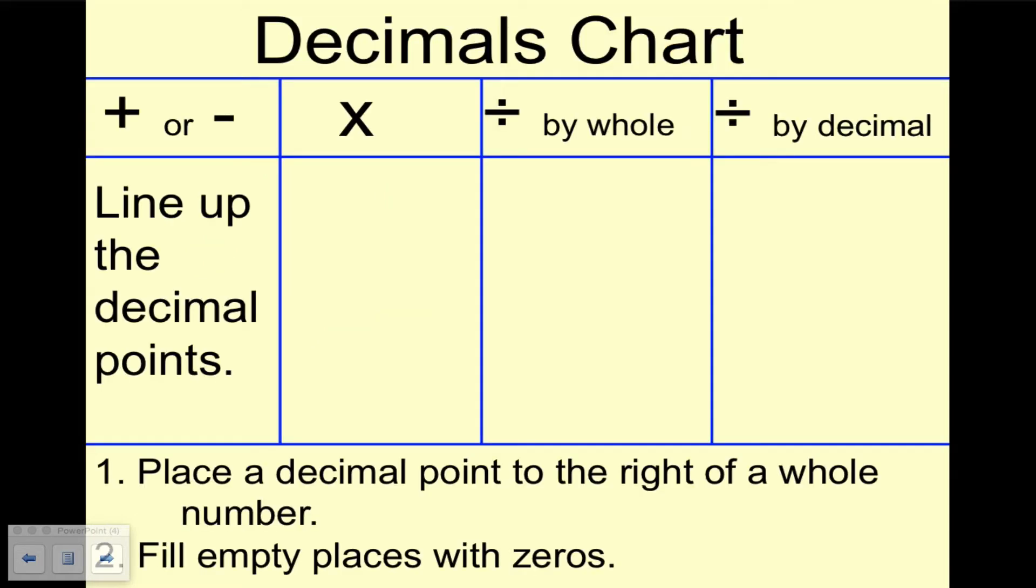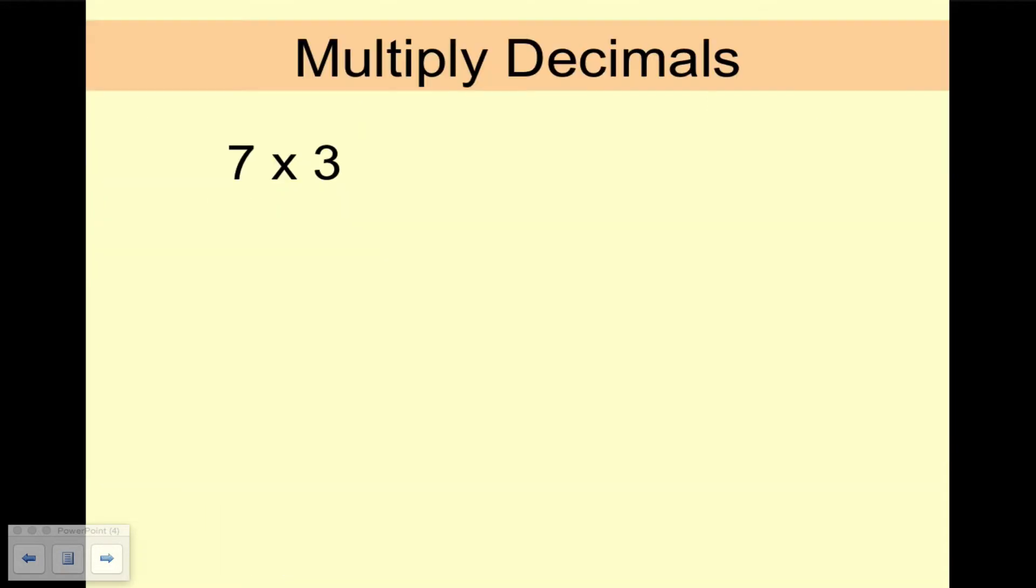Next, let's talk about how to multiply decimals. You multiply and then count the decimal places. Decimal places are digits after the decimal point. Well, we all know 7 times 3. That's right. It equals 21.